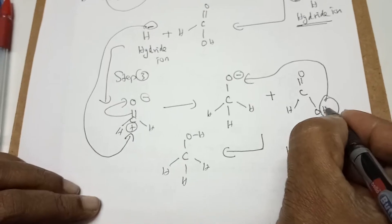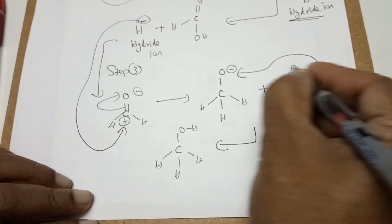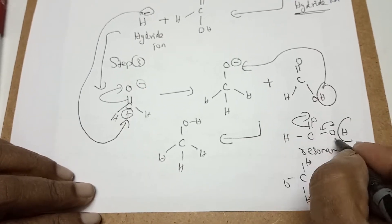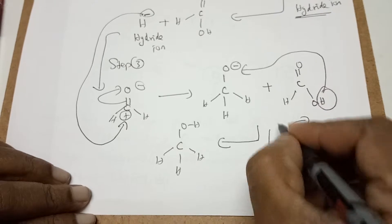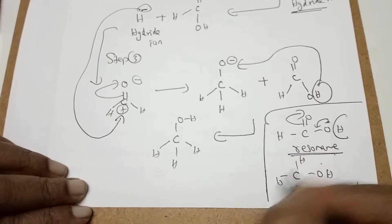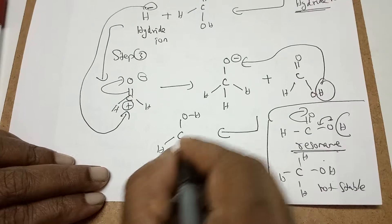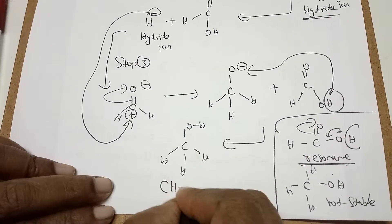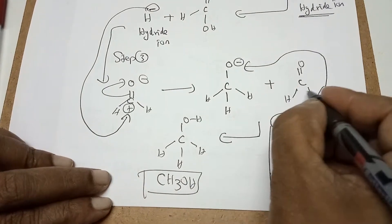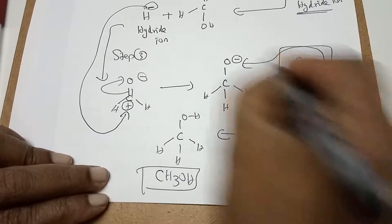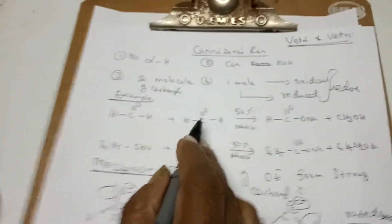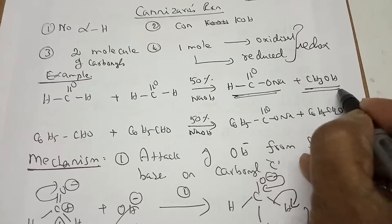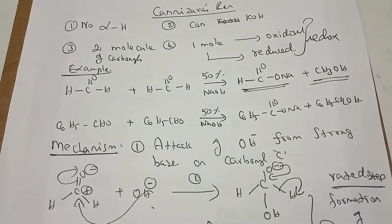So now again repeating: transfer of this proton to this one is because this ion is acid ion. This formate ion is stabilized by resonance. So this is the reason. And following this, you are getting the product as methyl alcohol. And here formic acid. So now coming to the equation: formaldehyde gives one molecule of sodium formate and another molecule of methyl alcohol. So this is the Cannizzaro mechanism.